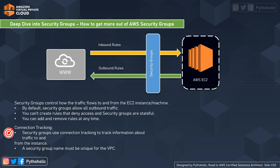As you can see in the diagram, we have the EC2 instance and the access is both inbound and outbound. By default, all incoming rules are blocked to the EC2 instance, and by default all outbound traffic from the EC2 instance is allowed.